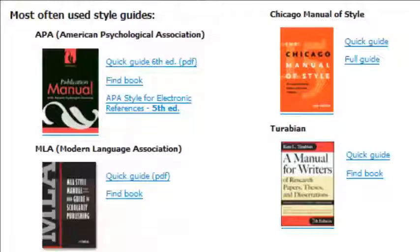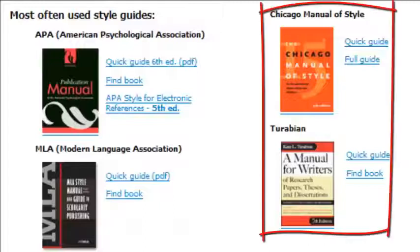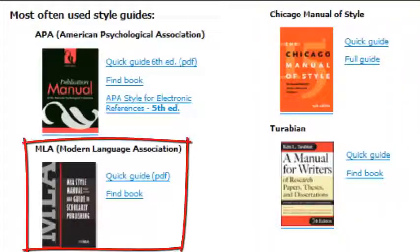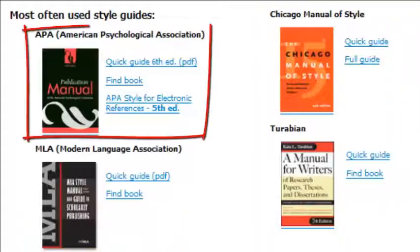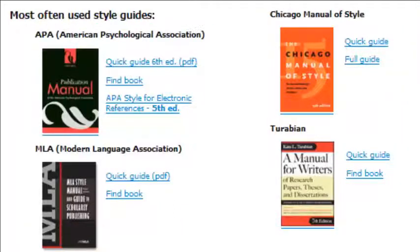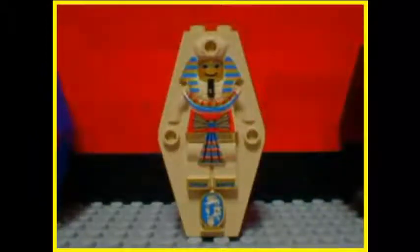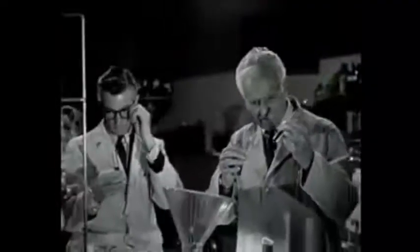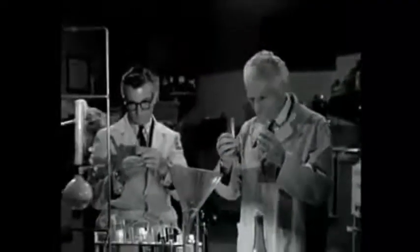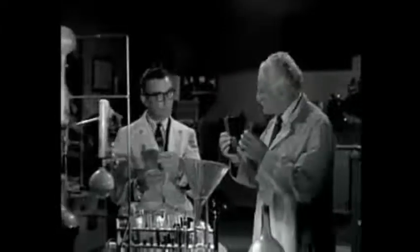The three most commonly used citation styles are Chicago, also known as Turabian, MLA, and APA. Several disciplines, such as anthropology and many of the sciences, have their own individual styles.